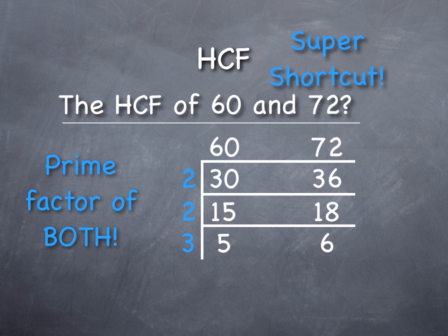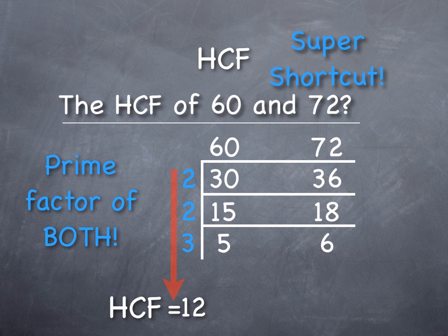What about five? Well, five goes into five but not six. And then we've reached all the prime factors that could go in. So we're left with the same prime factors: two times two times three. Two times two is four. Four times that last three is going to be equal to 12. So 12 is our highest common factor.